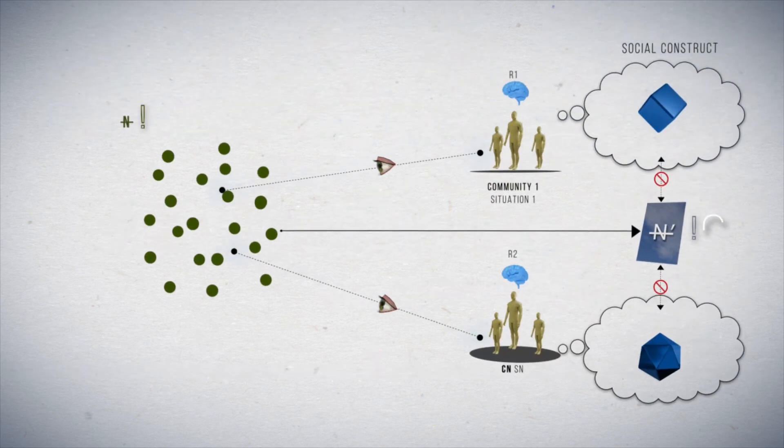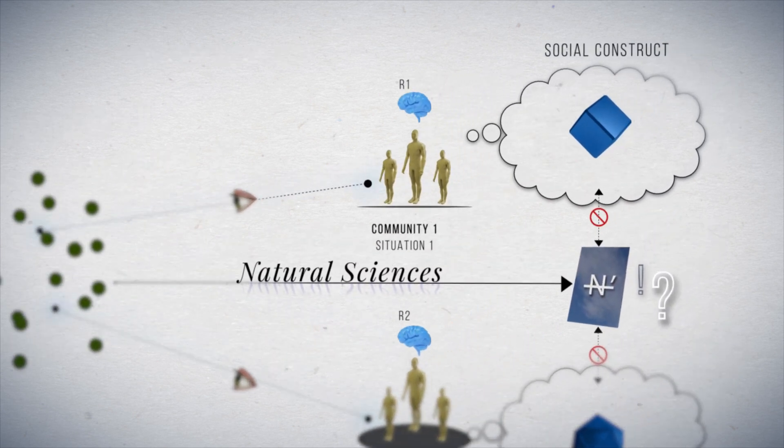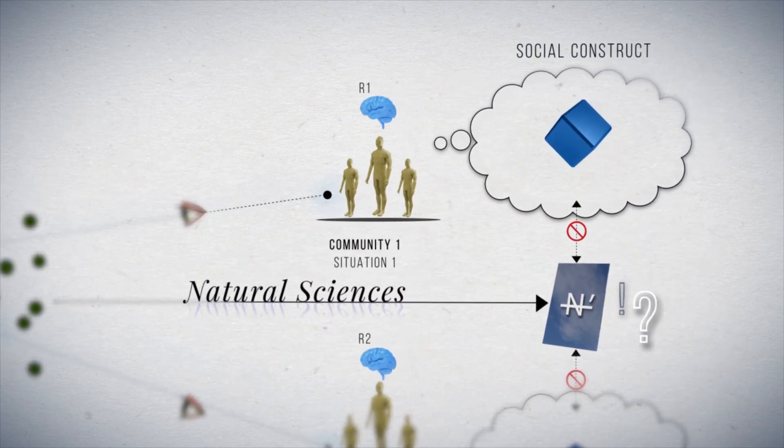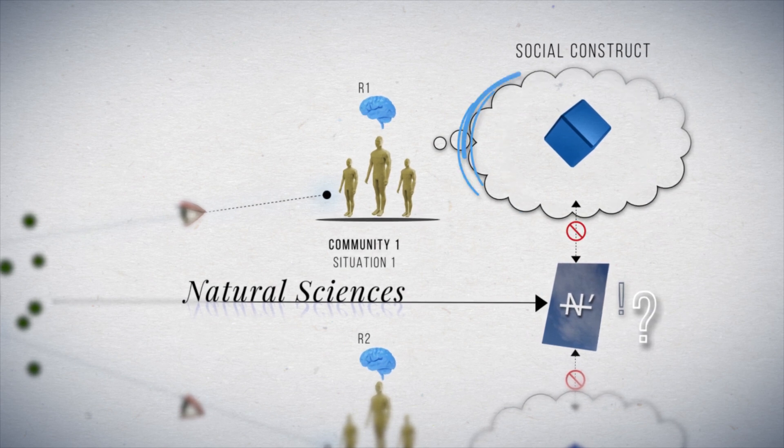However, in this context, how to explain the explanatory predictive success of natural sciences? Doesn't it imply a certain correspondence between scientific constructs and external reality?